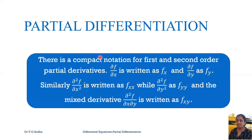There is a compact notation for first and second order partial derivatives. ∂f/∂x is written as fₓ, that is f suffix x, and ∂f/∂y as f_y. Similarly, the second order partial derivatives: ∂²f/∂x² is written as f_xx, ∂²f/∂y² as f_yy, and the mixed derivative ∂²f/∂x∂y is written as f_xy.